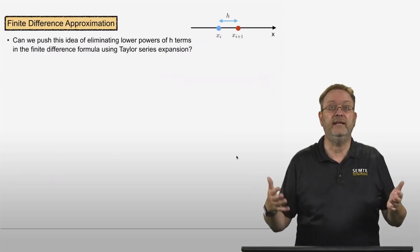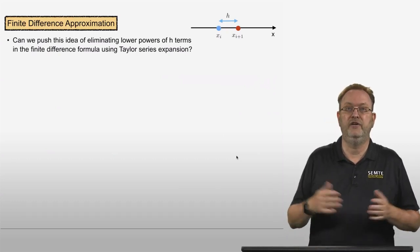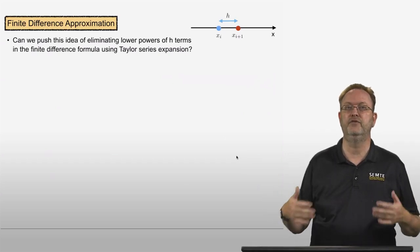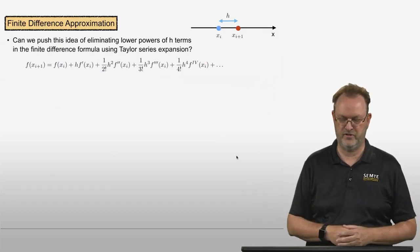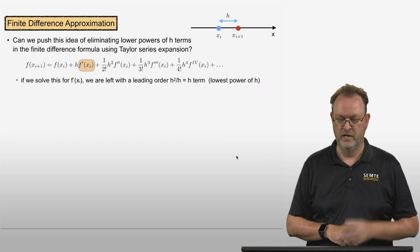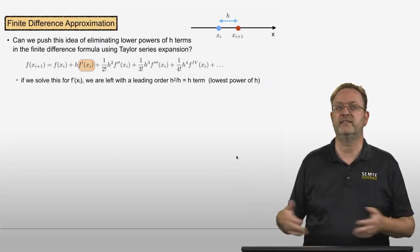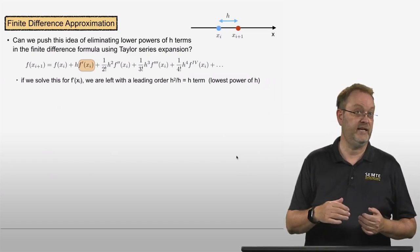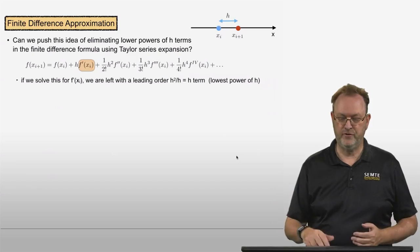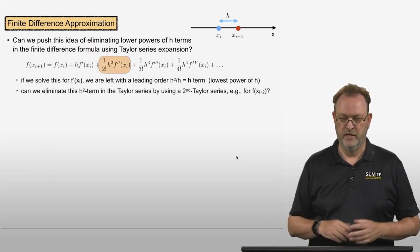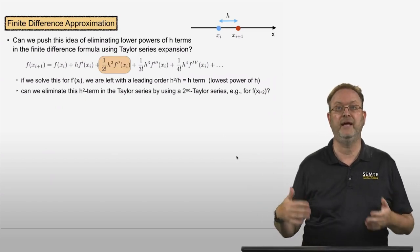We had the idea of combining Taylor series to increase the order of our finite difference approximation. Can we push this further by eliminating lower powers of h using additional Taylor series terms? So here is the Taylor series for f of xi plus 1, carrying a few more terms. If I solve for f prime, I'm left with a leading error term that is first order — the h squared term divided by h. To improve the order, I need to eliminate this h squared term, for example using the Taylor series for the point xi plus 2.